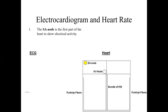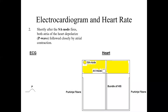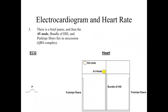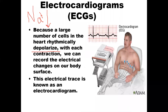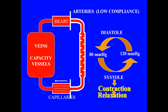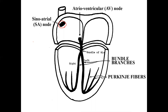Electrocardiogram and heart rate: the SA node is the first part of the heart to show electrical activity. It corresponds to the P-wave. So when the SA node activates, the initiation of electrical activity — called depolarization — begins. During this phase there will be SA node activation and P-wave formation, followed by a brief pause. Then the AV node, bundle of His, and Purkinje fibers fire in succession — that is called the QRS complex. When the SA node starts, it initiates the starting — that is the P-wave.